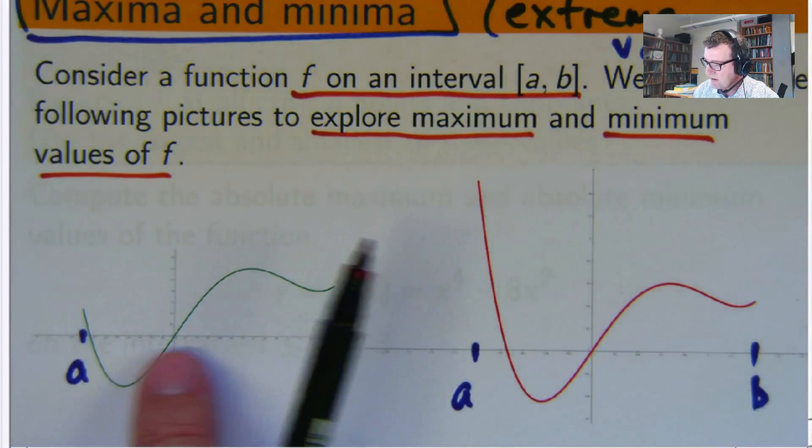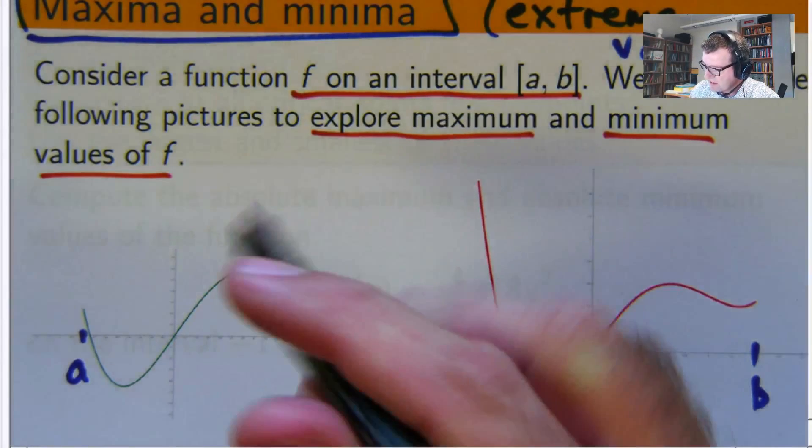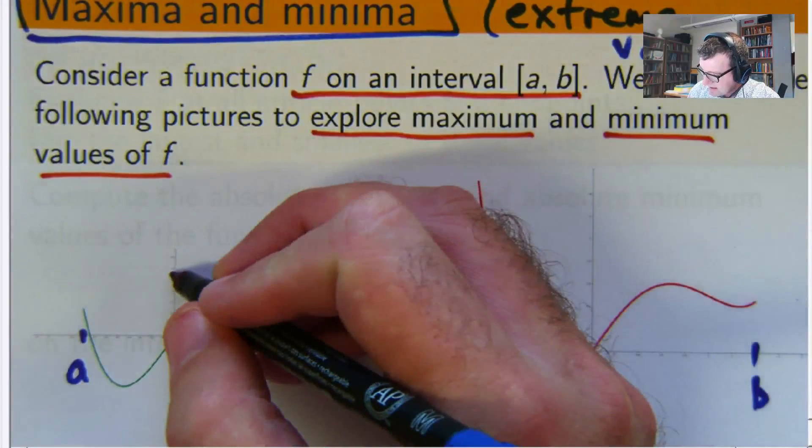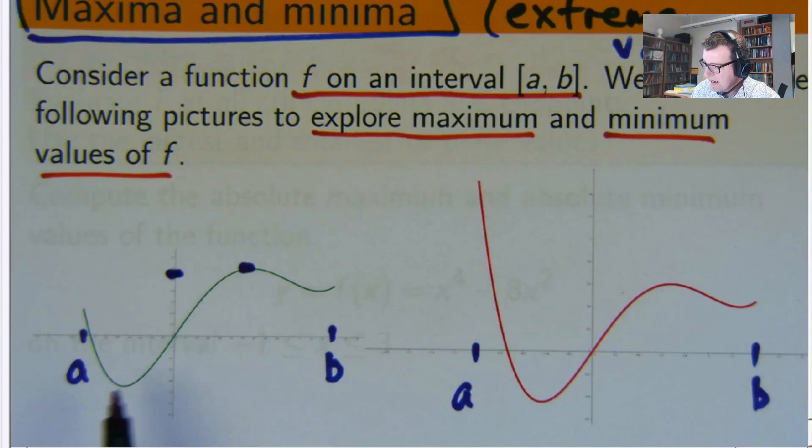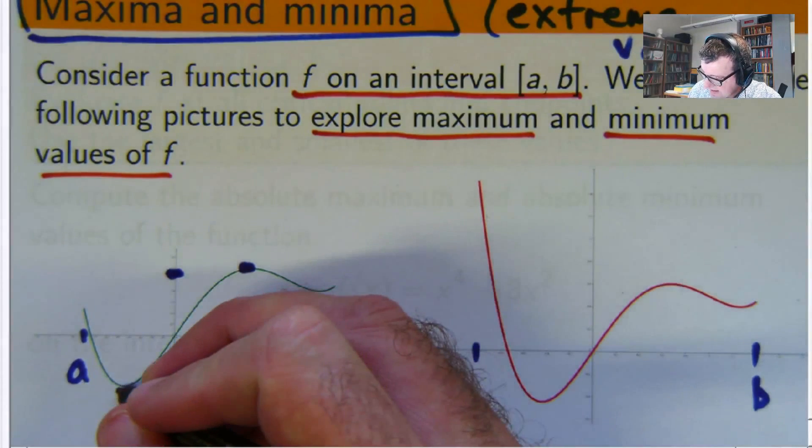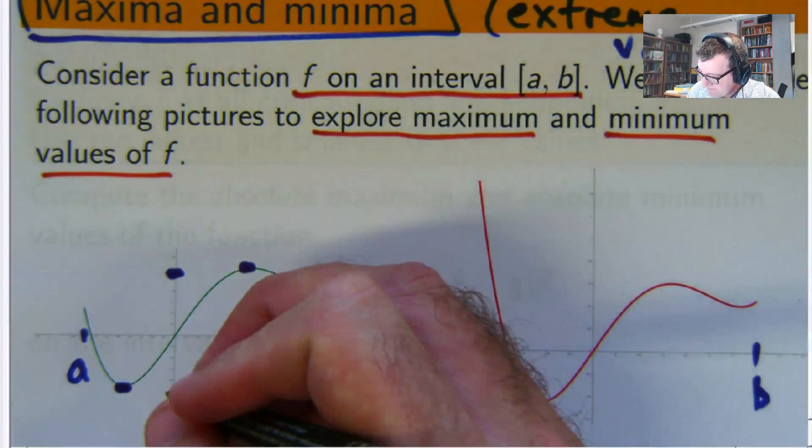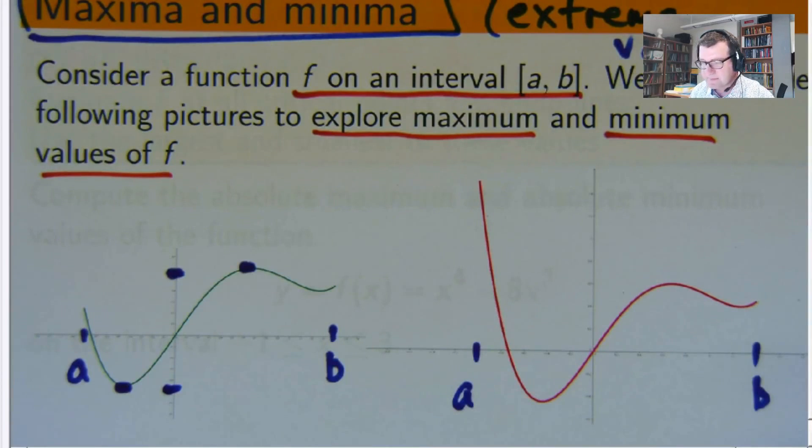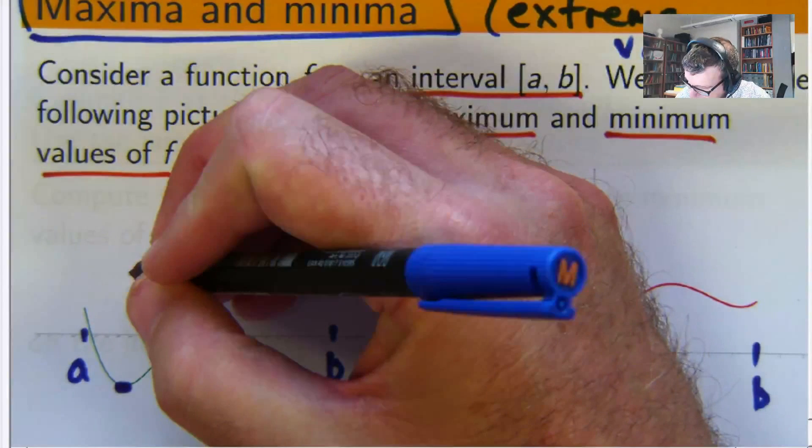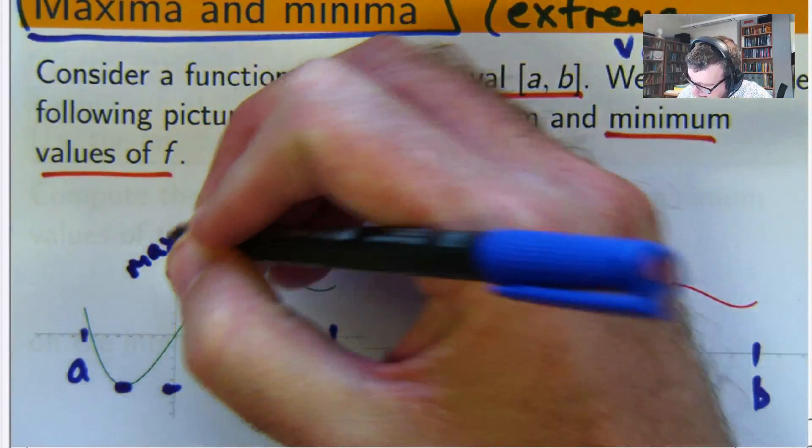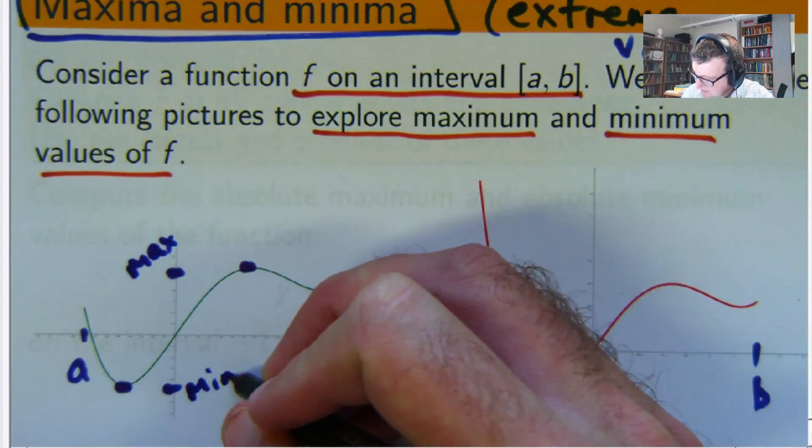When we talk about maximum, we're talking about where is the graph the highest on that interval. If you look here, where is the graph the highest? It's right there. So that would be a maximum point. And down here that would be a minimum point. You can see there's a maximum value there and a minimum value there.